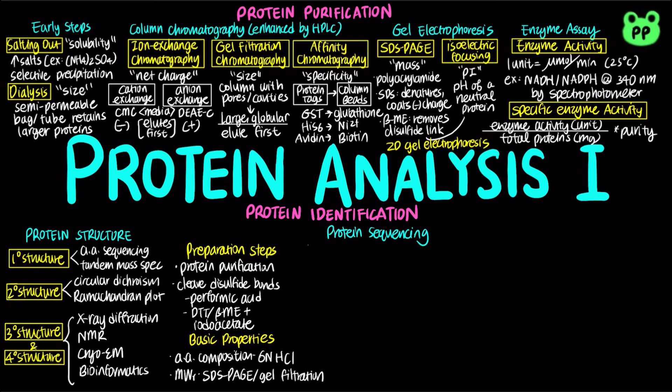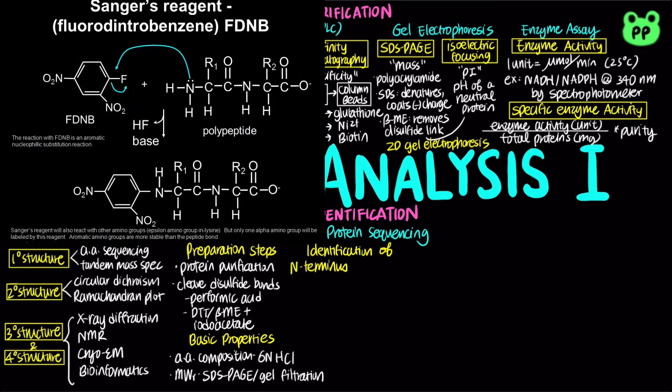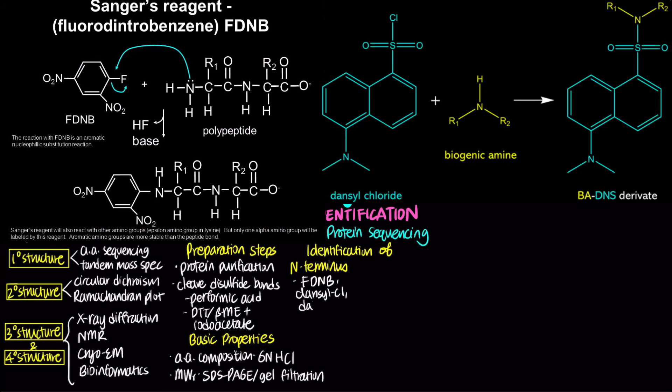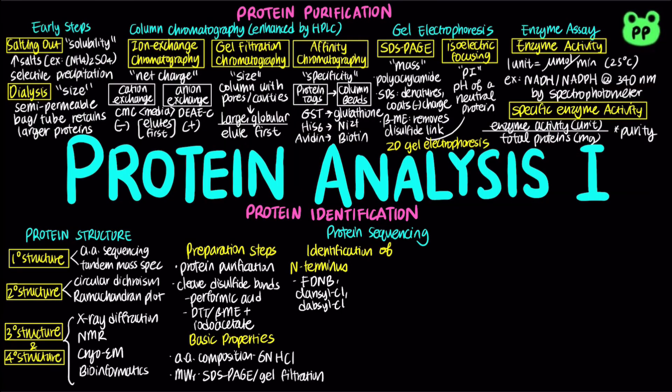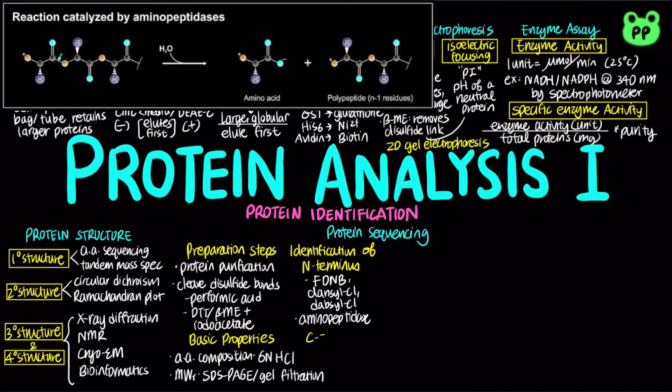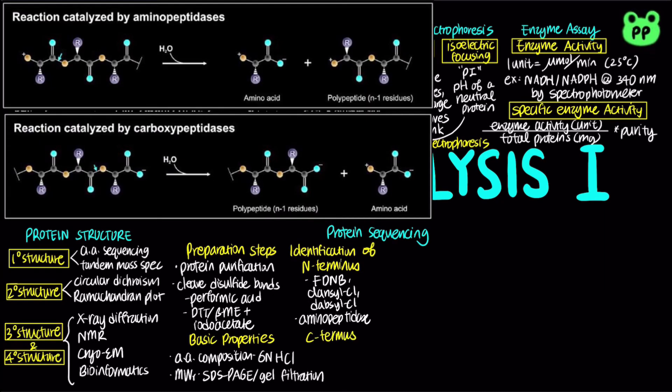The next step of protein sequencing often involves the identification of the amino terminus and the carboxy terminus. The amino terminus can be chemically modified with 1-fluoro-2,4-dinitrobenzene, abbreviated as FDNB, as well as dansyl chloride and dabsyl chloride. The amino terminal is then hydrolyzed to determine the amino acid. The amino terminus can also be determined enzymatically by aminopeptidase. The carboxy terminus can be determined by carboxypeptidase.